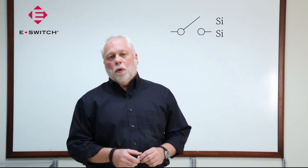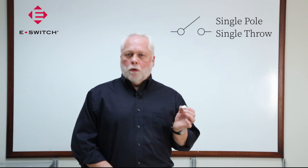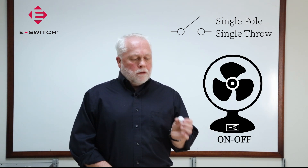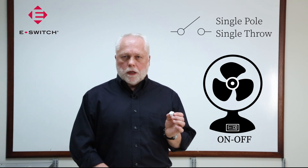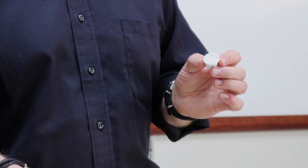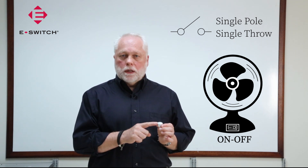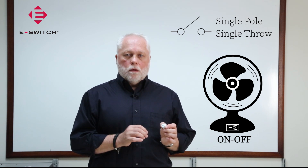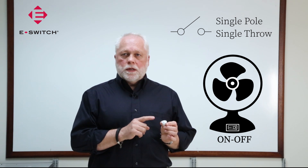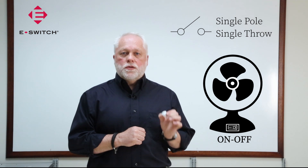So with that definition, let's take a look at the four most common types of poles and throw circuitry. The first one is a single pole, single throw. For illustration purposes, I'm going to use this on-off rocker. If you envision this rocker mounted into a fan — when the switch is in the off position, the fan is not running. As I actuate the switch, I close the circuit, running the electrical current from your wall outlet to the fan motor. There is one closed circuit, hence this is a single pole device. Since this is an on-off switch, there is a closed circuit only in the one position — the on position — which illustrates that this is a single pole, single throw device.